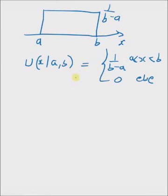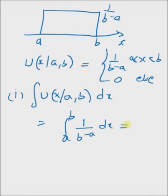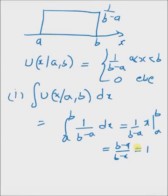Given this distribution function, what are the properties? The first one is: what is the area under this curve? Since this is a probability density function, the area should be 1. The integral from a to b of 1 by b minus a dx equals 1 by b minus a into x, evaluated from a to b, which is b minus a by b minus a, equals 1. Hence the area under this distribution function is 1, confirming it is a proper probability density function.